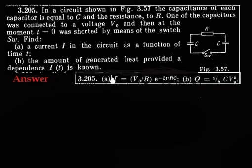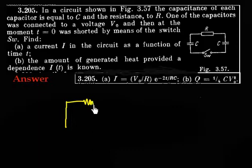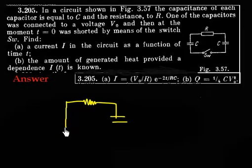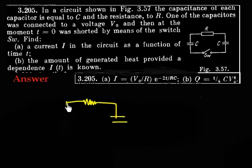Let me show the circuit again. This circuit simply has a resistor on one side, a capacitor on one side, and here also you have a capacitor. So this is the capacitor, and this side also you have a capacitor. Initially this capacitor is charged.